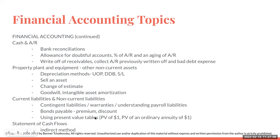Cash and accounts receivables: bank reconciliations — do you know how to do that? Do you know what an allowance for doubtful accounts is? Do you know how to compute that using the percentage of AR and aging of AR? How do you write off receivables, collect AR previously uncollected, and record bad debt expense?